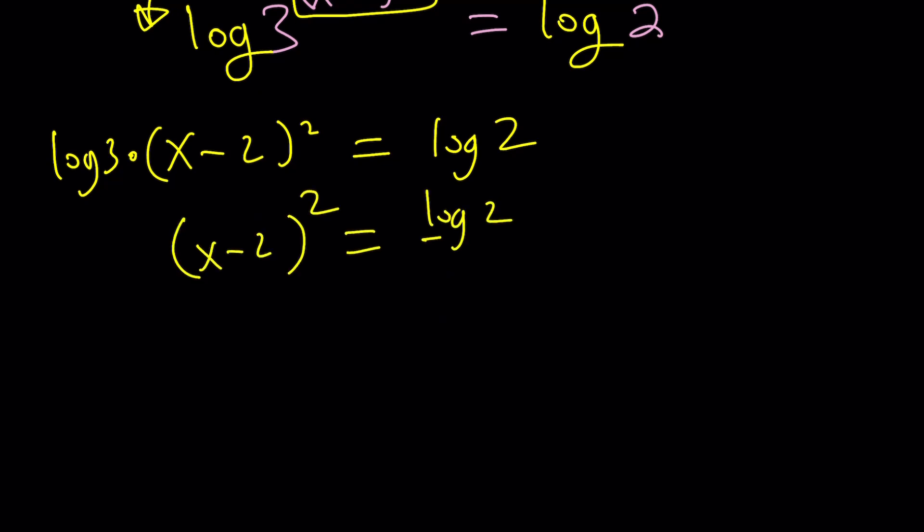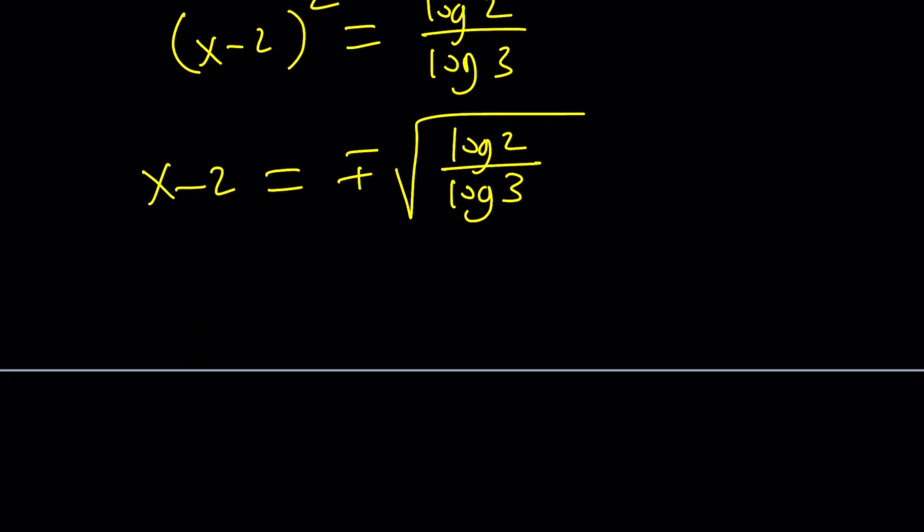But of course, I need to square root both sides and put the plus minus signs. Remember, when you do the radicals or x squared equals something, you should always consider two solutions. And then finally, add two to both sides. And you should get the solutions as before.